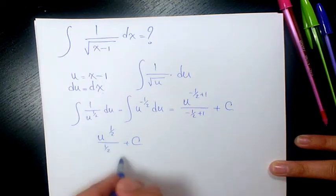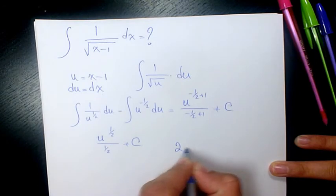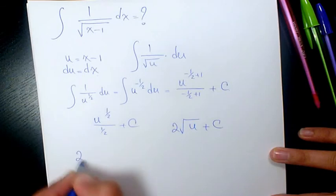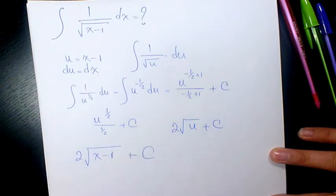What is u? u is x minus 1. So we have 2 square root of x minus 1 plus a constant number. That's the final answer.